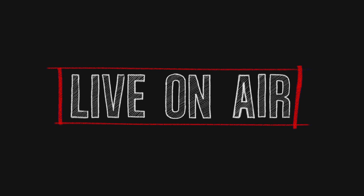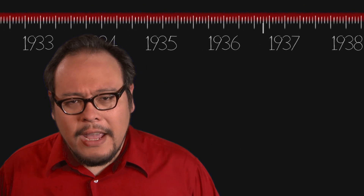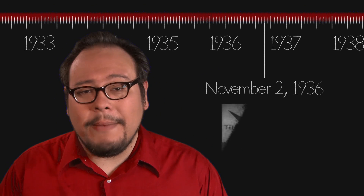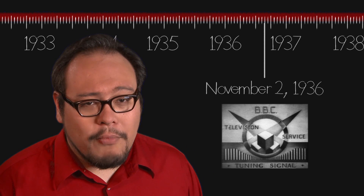Our story begins in the era of electronic and mechanical engineers. Technologically speaking, the capability of broadcasting live TV signals started rather early in the 20th century. In fact, November 2nd, 1936 was when the BBC began transmitting the world's first public regular broadcast service.